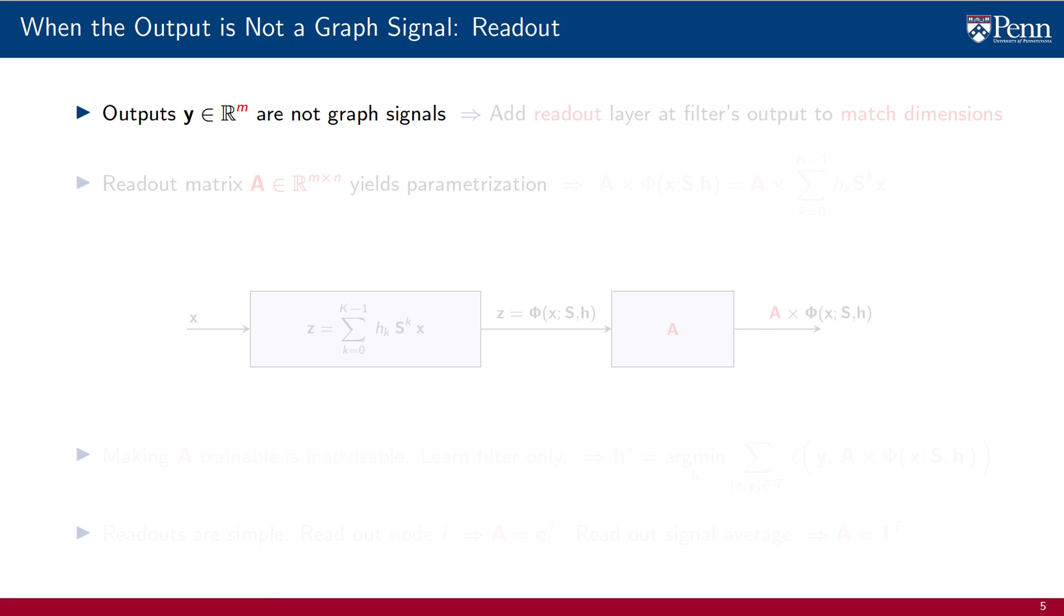When the outputs we are trying to predict are not graph signals, we add a readout layer to match dimensions. Namely, introduce a matrix A with n columns and m rows and use a parameterization in which we multiply the output of a graph filter, which is a graph signal with n components, by the matrix A.